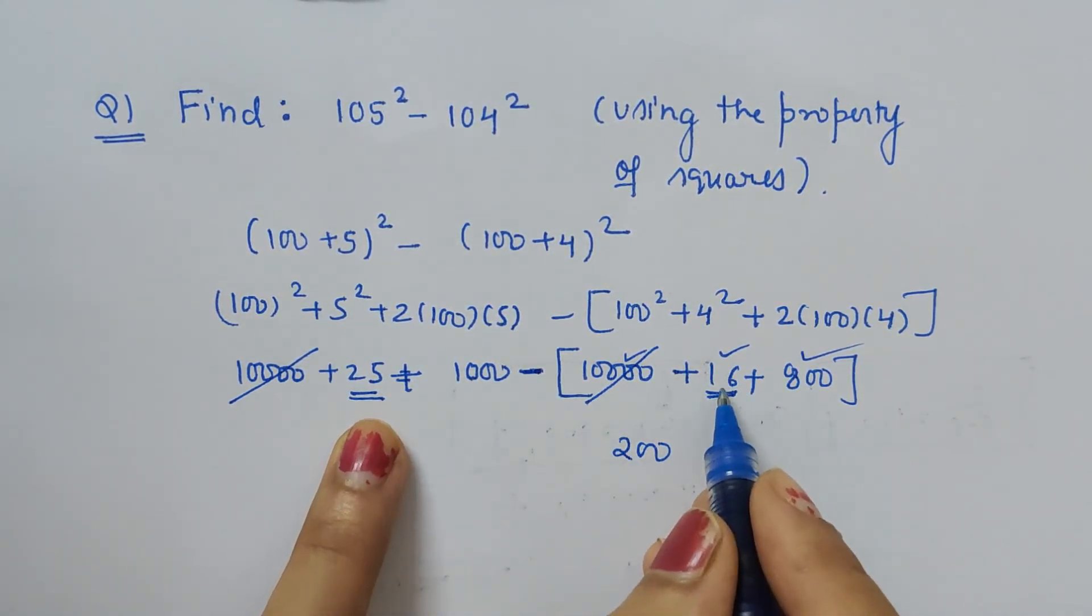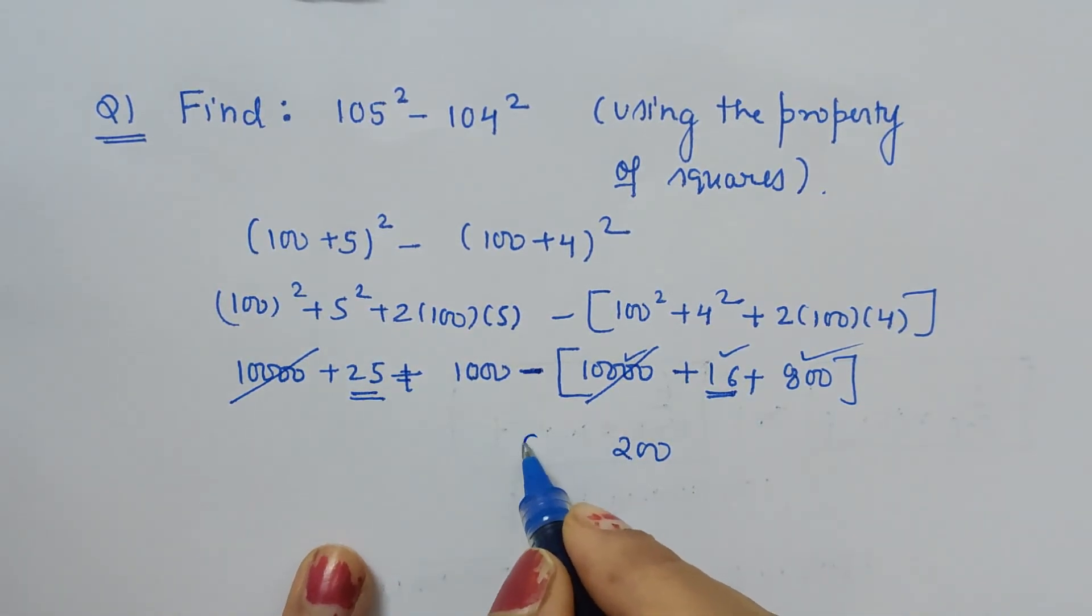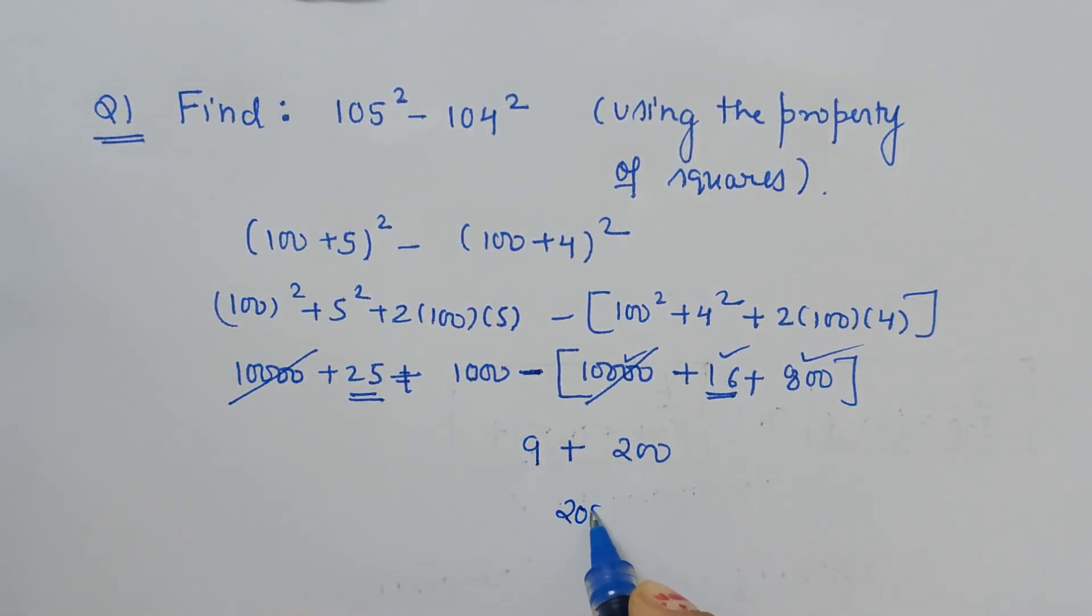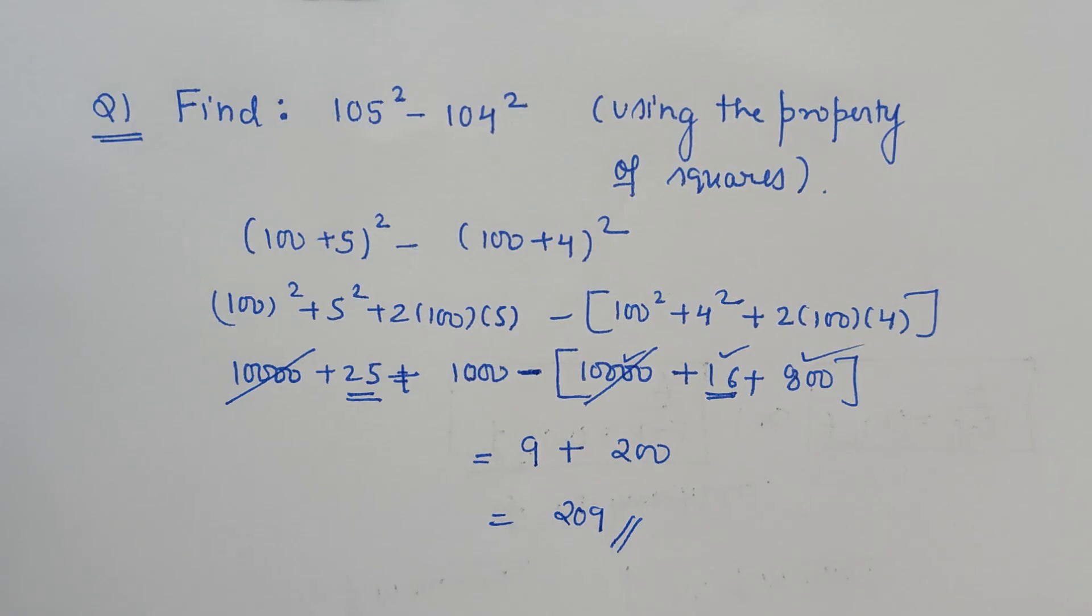So 200 plus 9 equals 209. This is the value for the given question. Thank you.